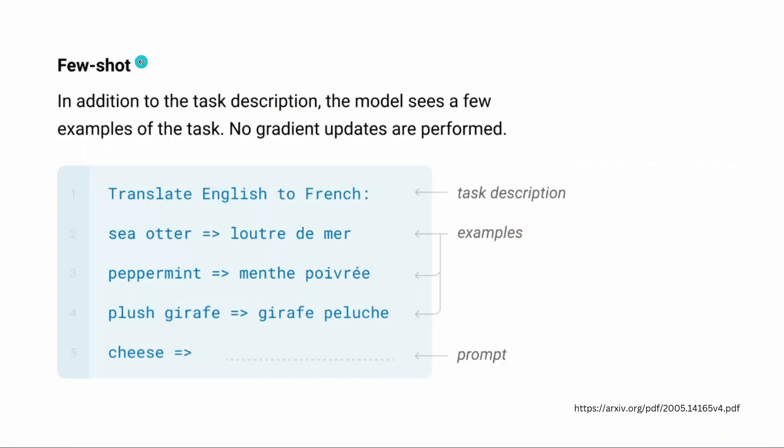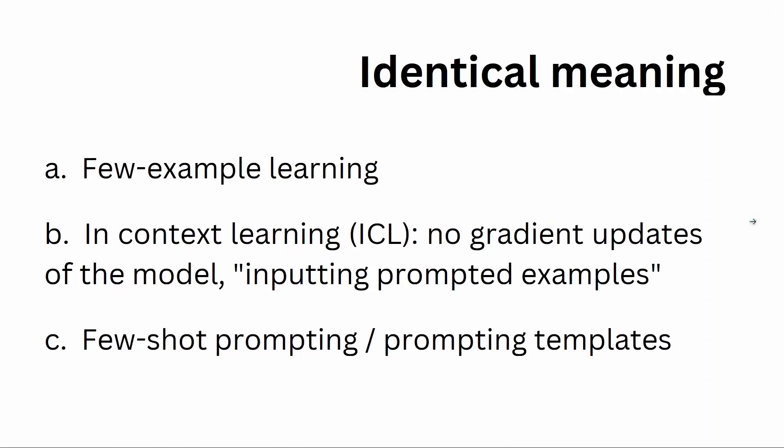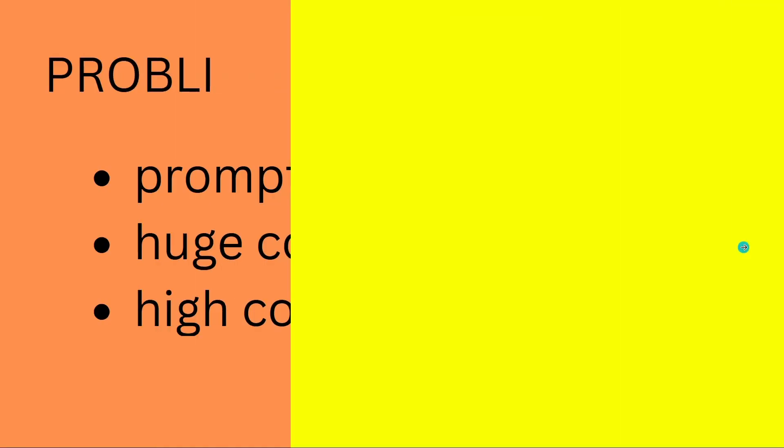And then we have few-shot learning. And now in addition to the task description the model sees several, few here, three examples with an English word and a French word. Three examples and then we give it a prompt, the English word, and we expect the system to fill out the French word for this. And on this few-shot application we're gonna focus today because GPT-3 was really good in this. Now maybe you will see other terms like few-example learning instead of few-shot learning. And the whole meta structure is in-context learning or ICL, where you have no gradient updates that are performed on the SBERT model or on the LLM model. Another wording is also few-shot prompting or we talk about prompting templates.